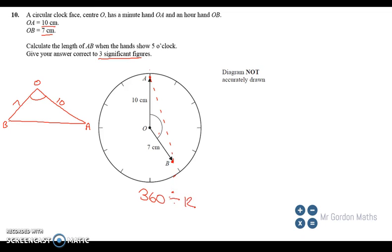So we know each section, each section is worth 360 divided by 12, that's going to give us 30, 30 degrees.